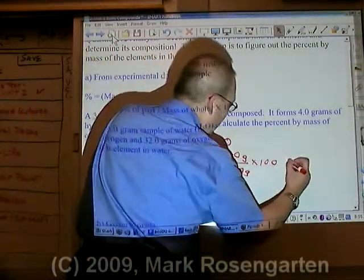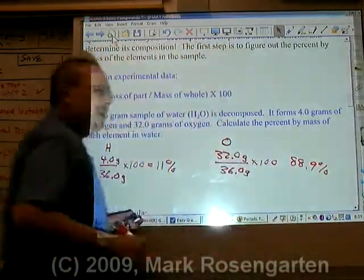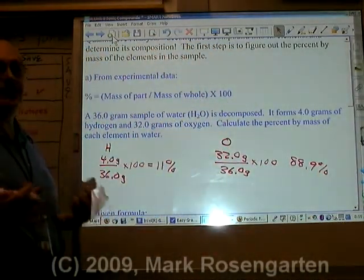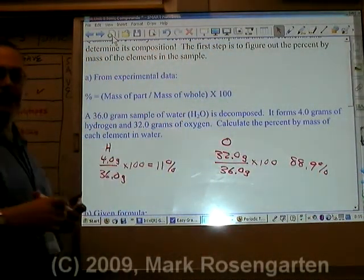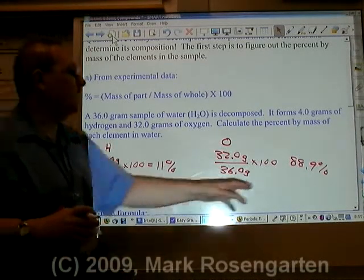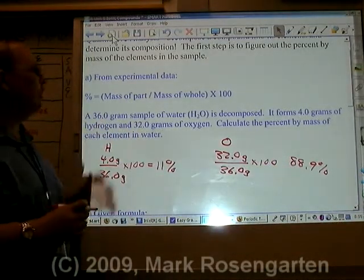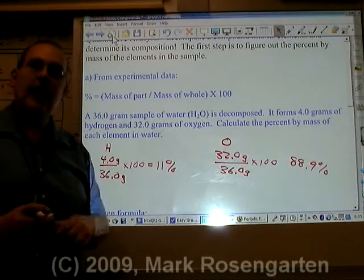Oxygen makes up 88.9%. You're going to notice it doesn't round exactly to 100, but that's because of significant figures. It's going to be in the ballpark right around 100. That's how you find the percent composition of the elements in a compound with experimental data.